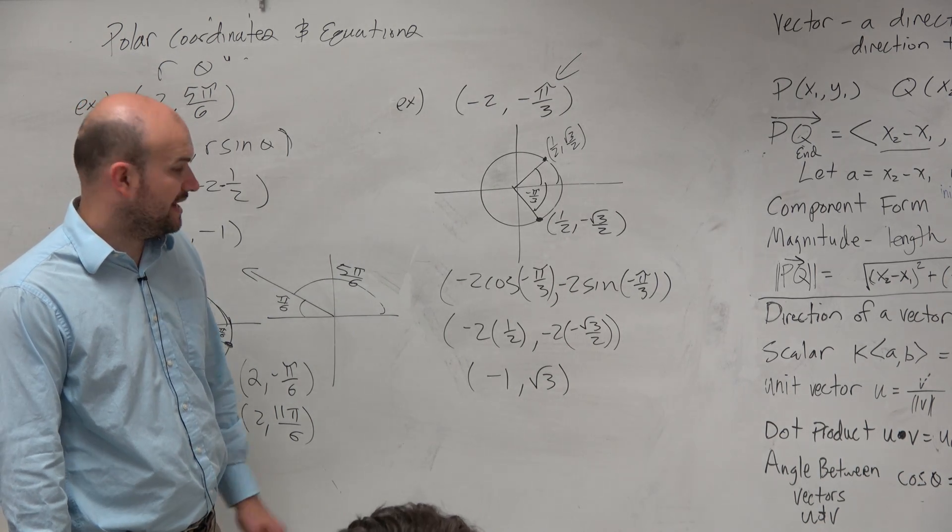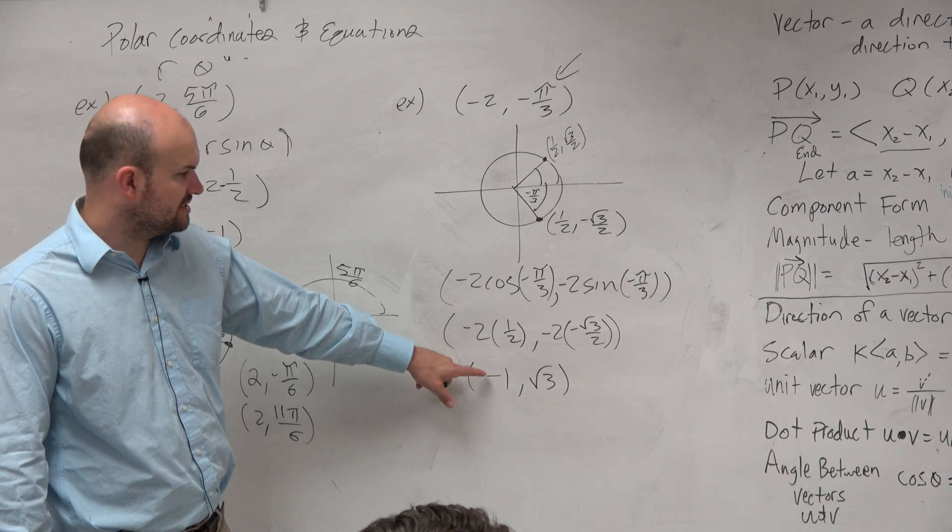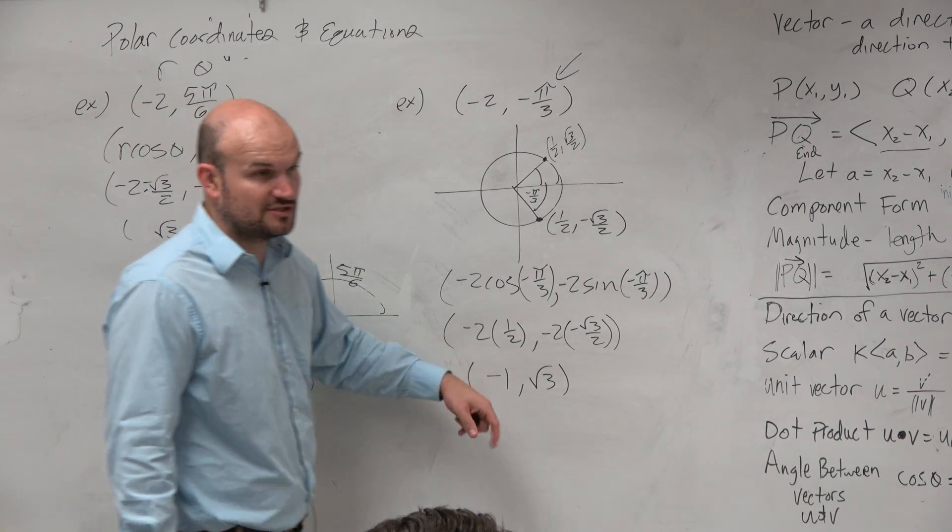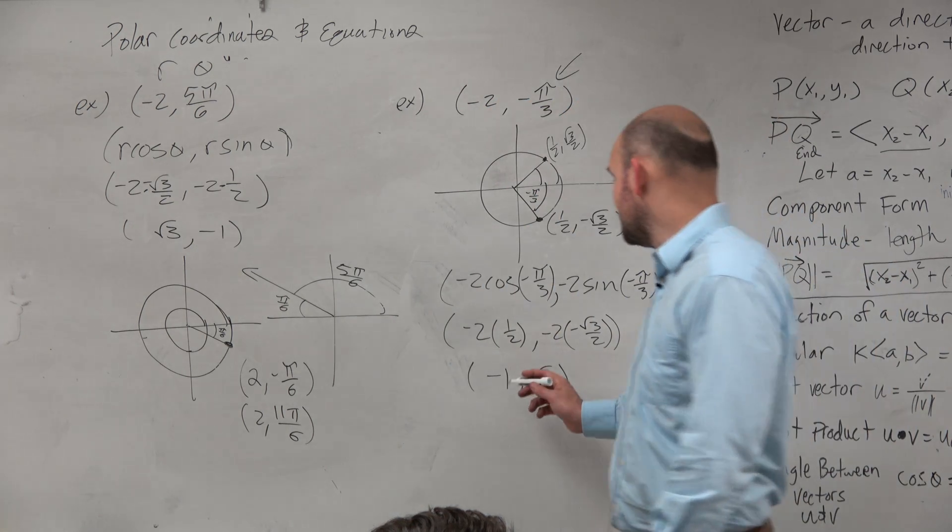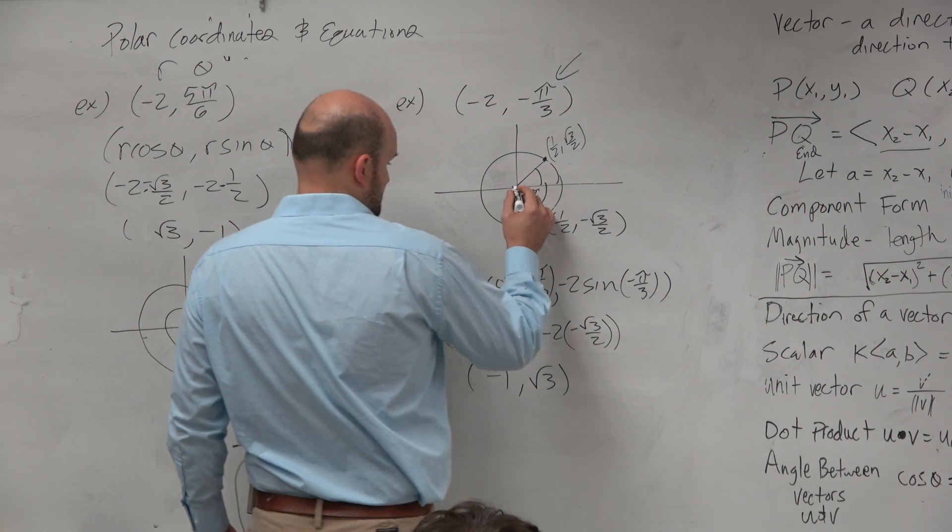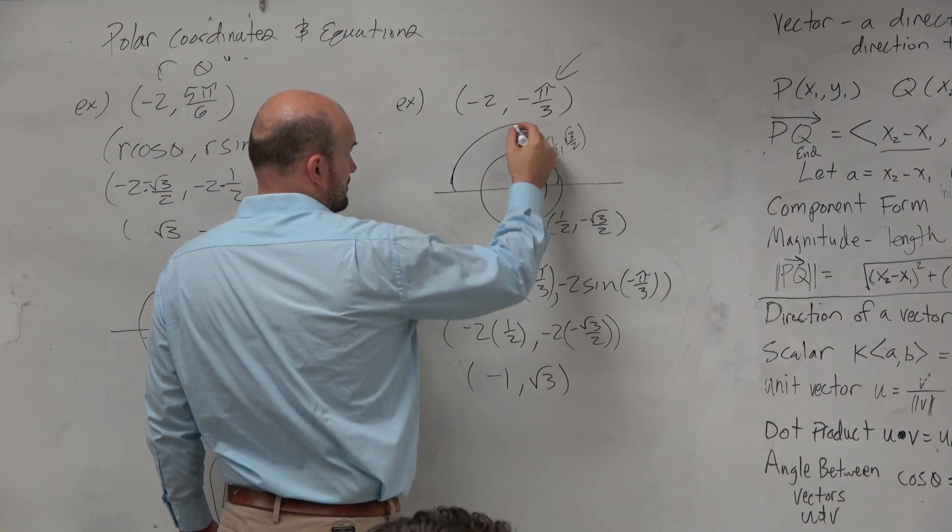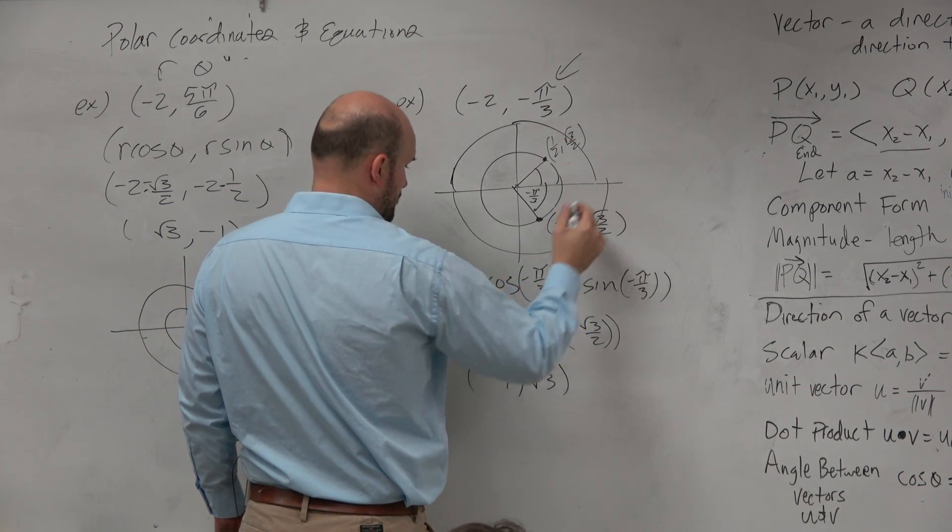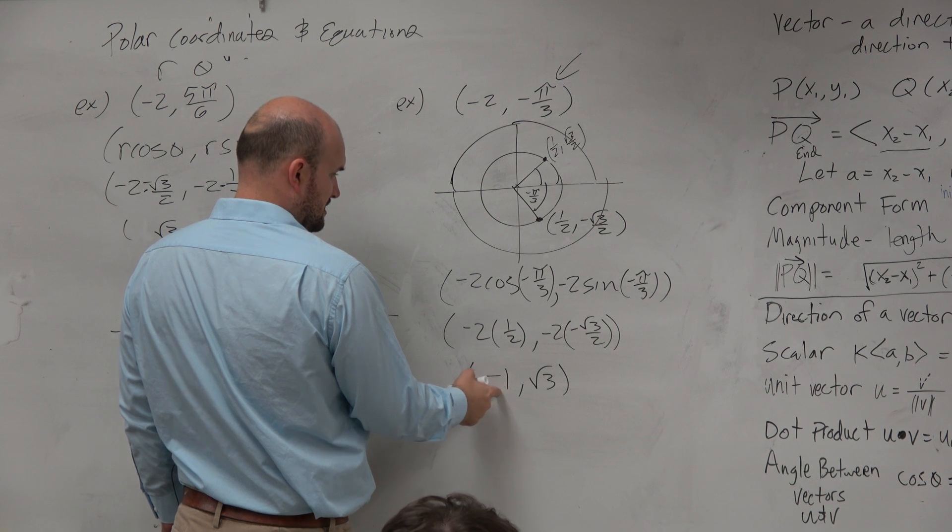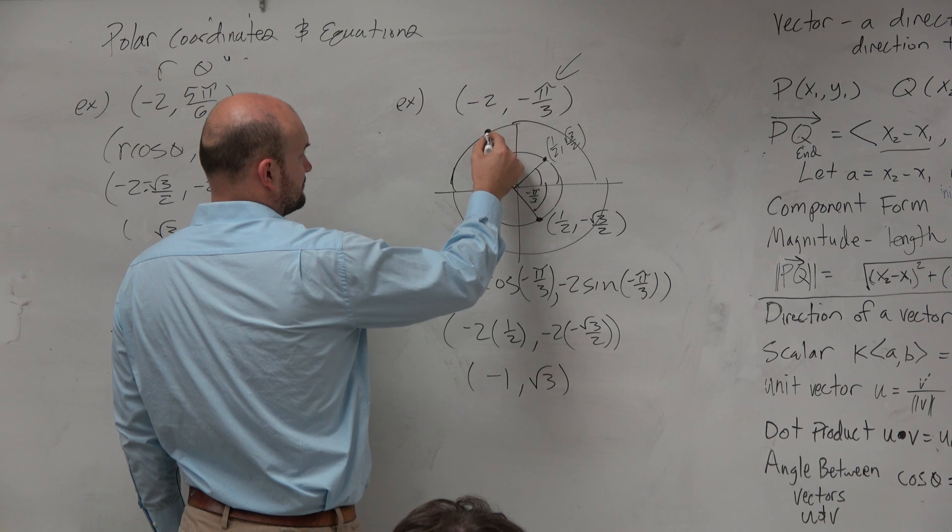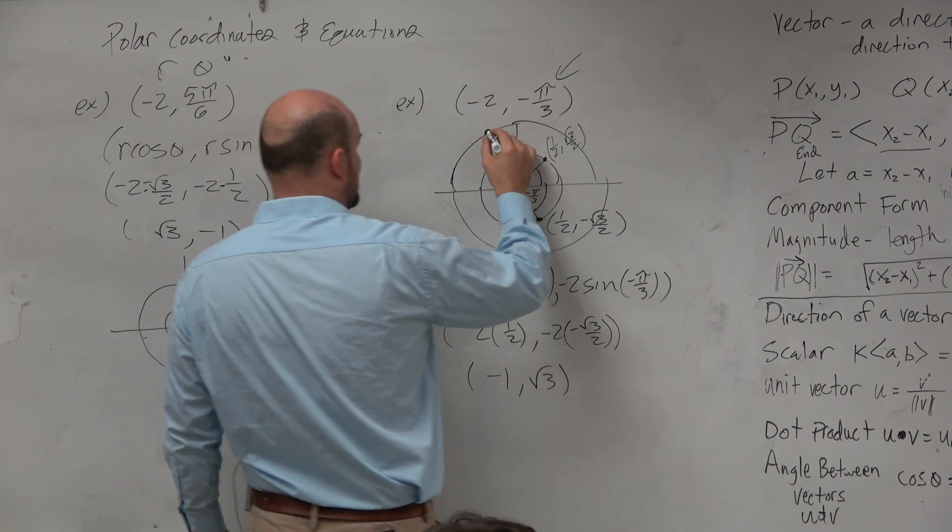So if we look at this point, negative 1 square root of 3, which quadrant is that in? Remember, this is a rectangular coordinate. So the x coordinate's negative, y coordinate's positive. So that means it has to be somewhere over here, right? So we're at negative 2. Wait, that's a rectangular coordinate. Yeah, so it's at negative 1, and then it's a little bit higher. So here's my coordinate point.